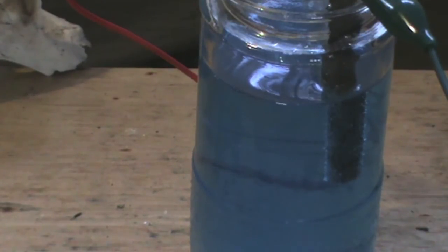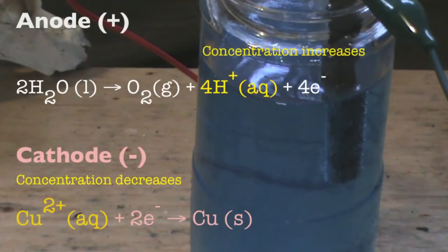As we extend the duration of the electrolysis, the concentration of hydronium ions increases at the anode. And at the same time, the concentration of copper 2+ ions decreases at the cathode as it is reduced to copper metal.